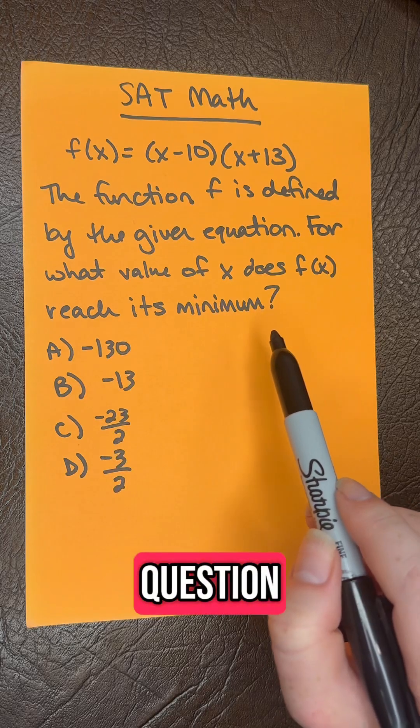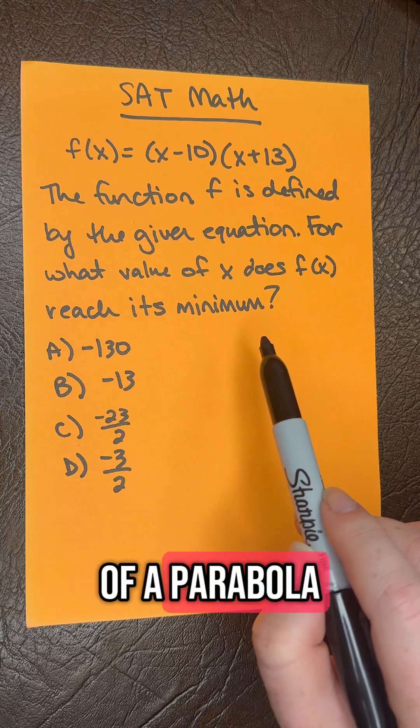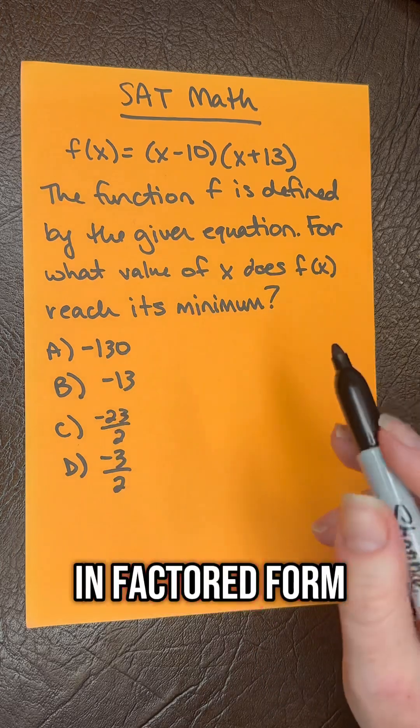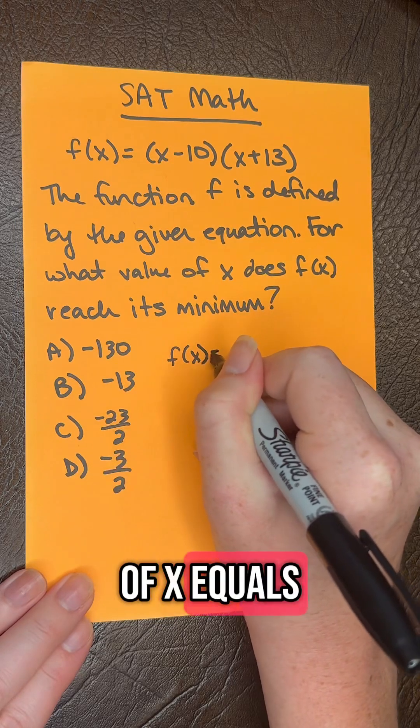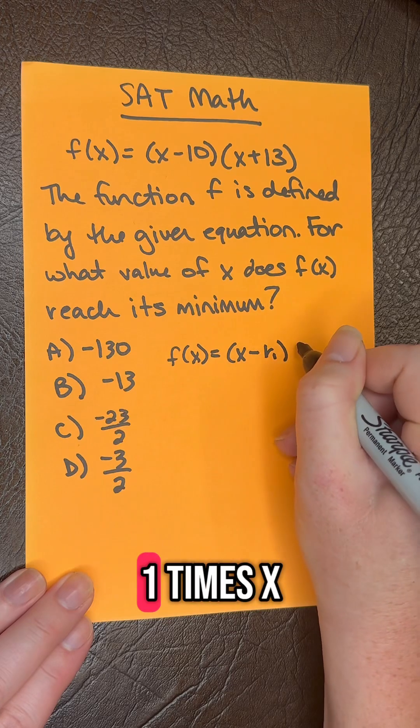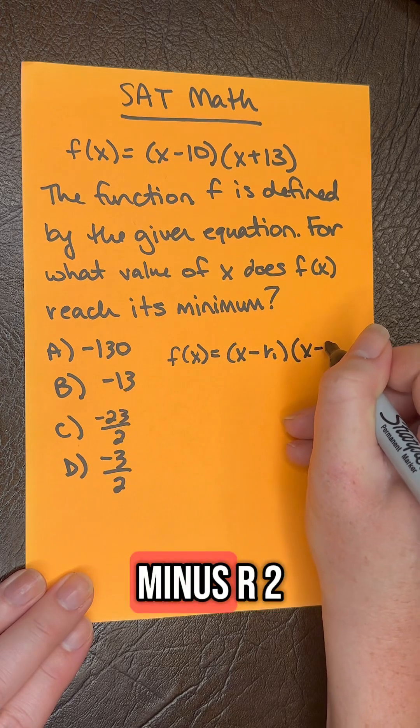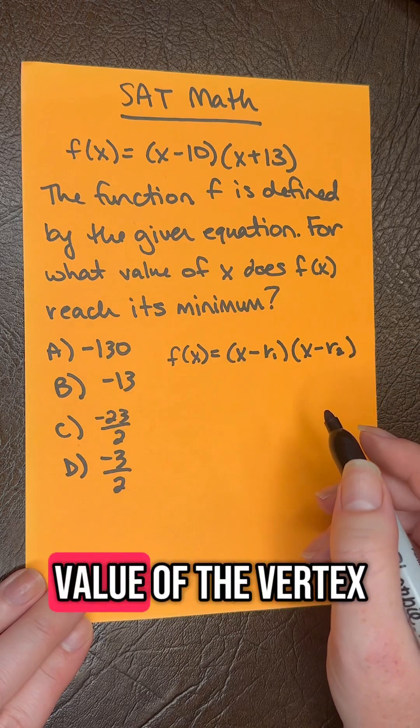So for this question, we need to use the formula for the vertex of a parabola in factored form. Let's write that out together. We have f(x) equals (x minus r1) times (x minus r2). And the x value of the vertex, which is the minimum or the maximum,